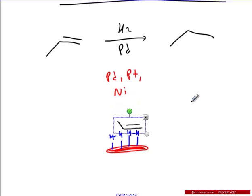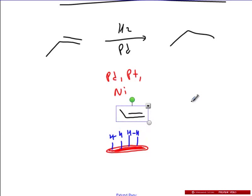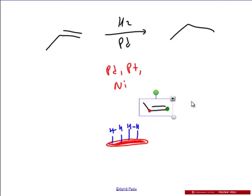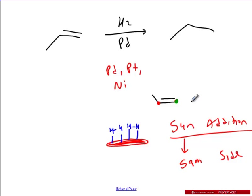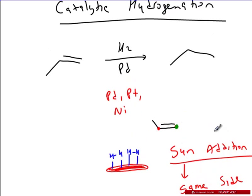Notice how I'm dropping down — this is showing that the Hs add to the same side. If we say this red carbon and this green carbon are associated with each other, when it drops down, the red and the green carbon are both connected to the Hs from the same side. That's known as a syn addition, meaning syn for same side. So both of those Hs are going to add on the same side to the alkene.